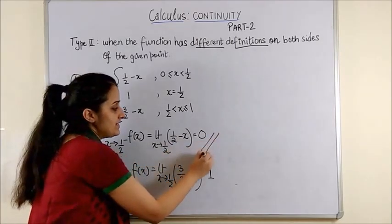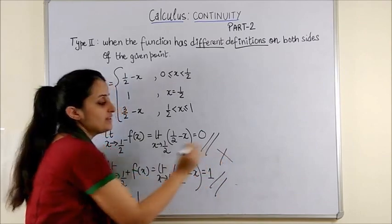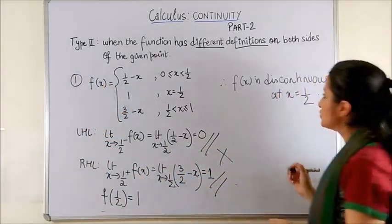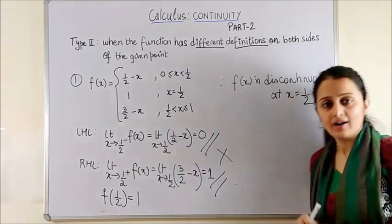And value of the function at half is 1. Again 1. However, LHL and RHL they are not the same. Therefore, the function is discontinuous at x equal to half.